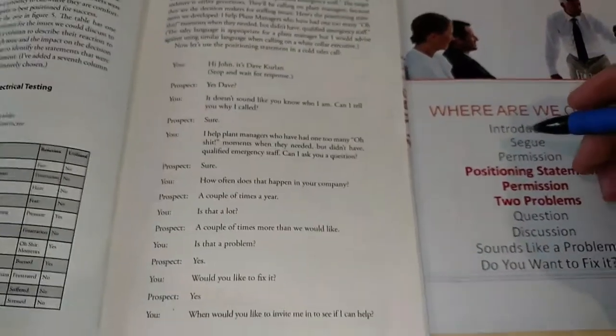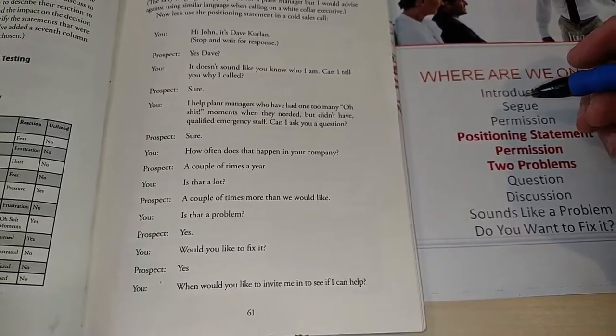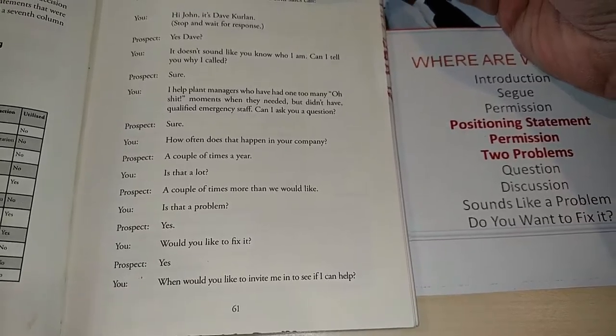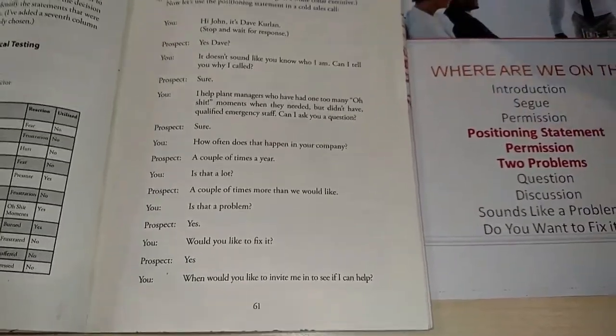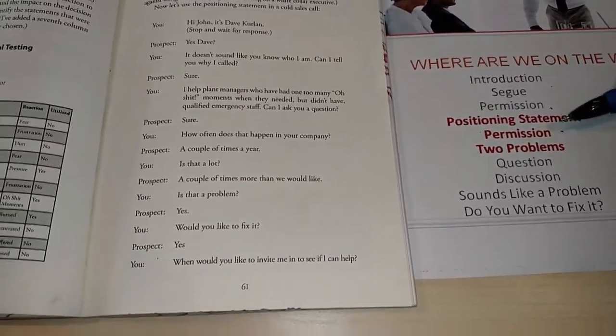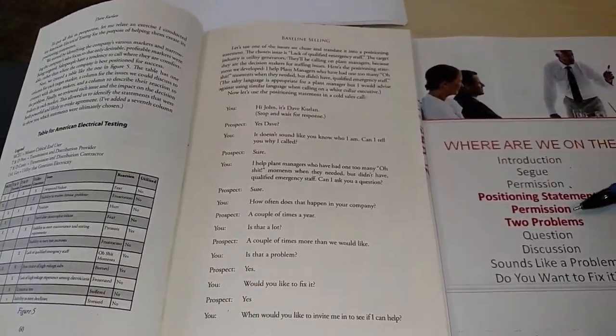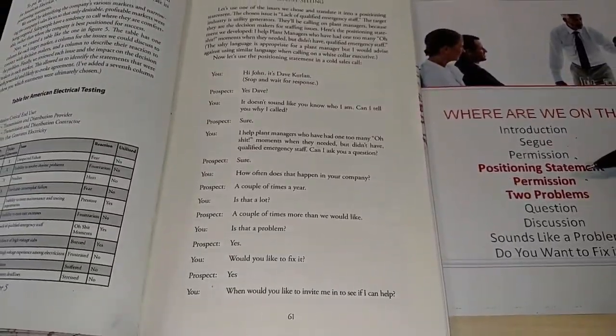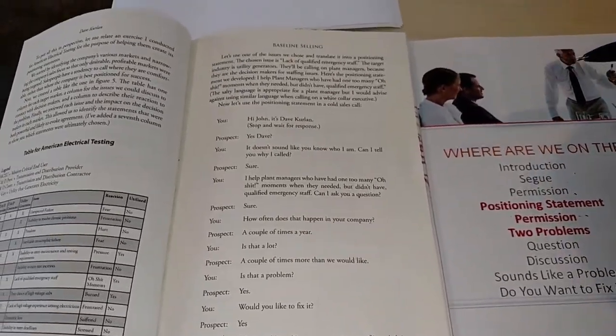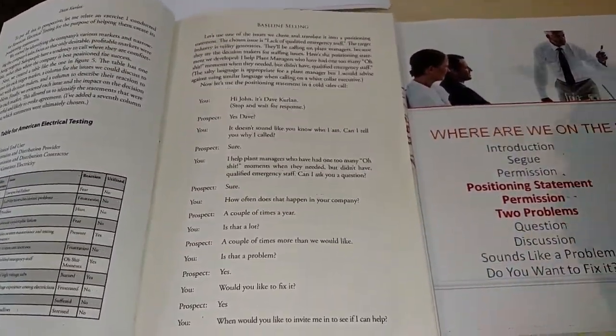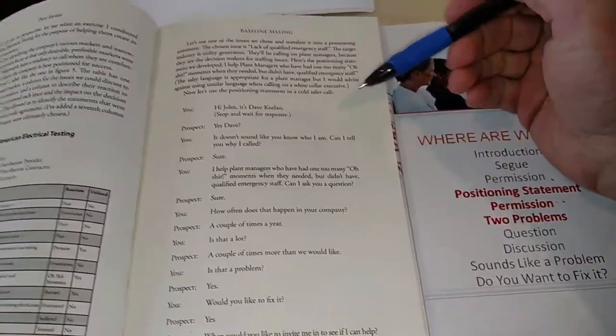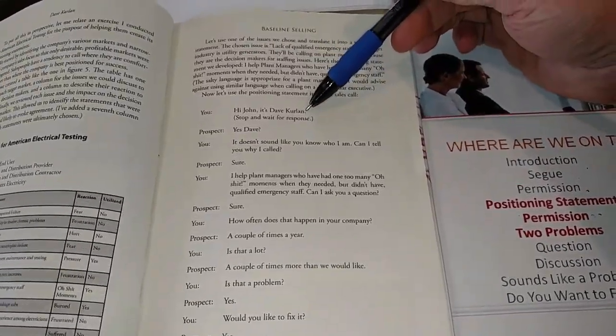I'm going to take a photo of this as well. And of course, you should have your baseline selling book. If you don't have it, it'll be on the way. Page 61 of the book goes through an example of introduction, segue, permission, and then the positioning statement. And it doesn't get into the two problems part of it. It gets down to the positioning statement, the permission, and then goes a little bit of a different way. Because there are variants to how we run initial calls, warm calls, follow-up calls, so on and so forth.